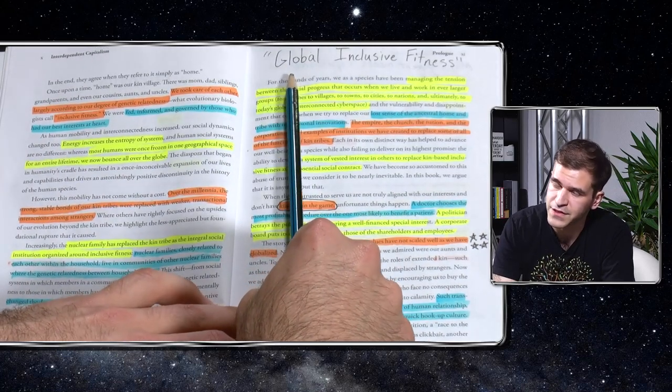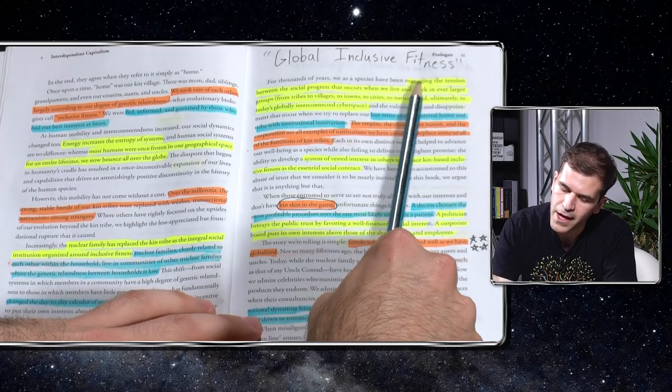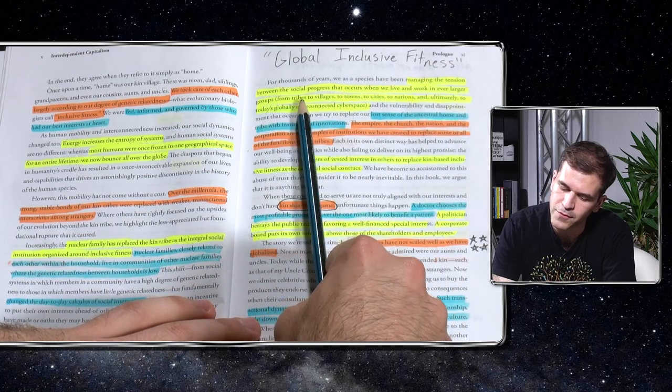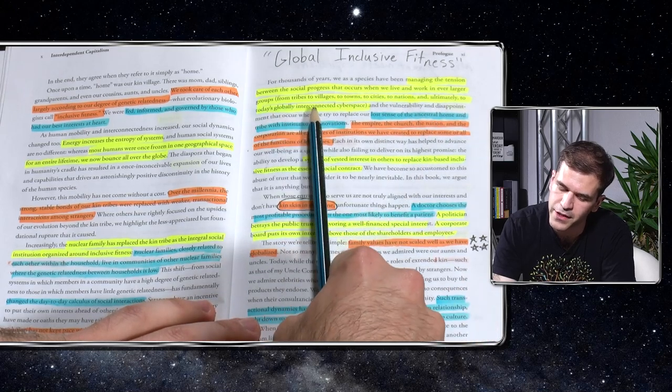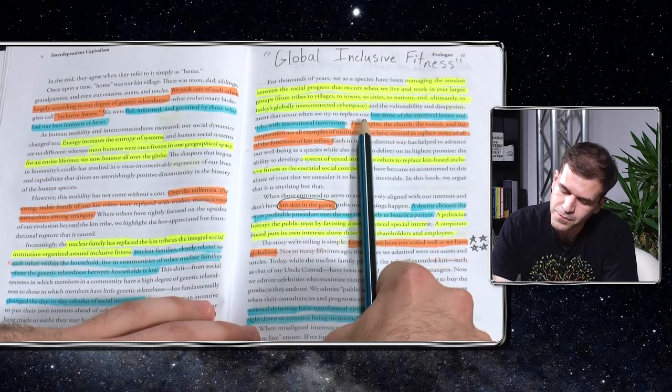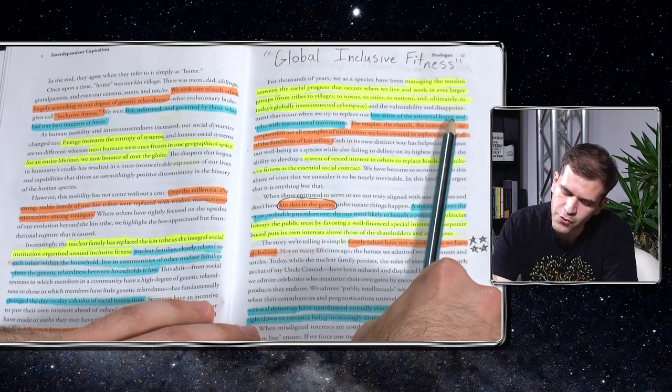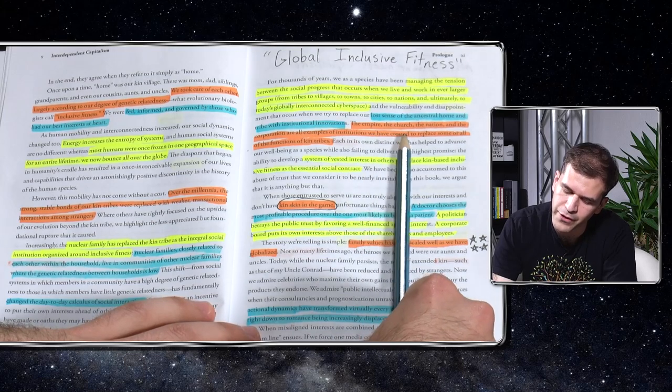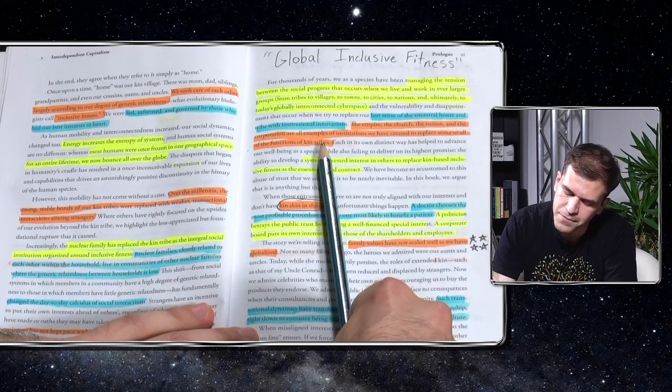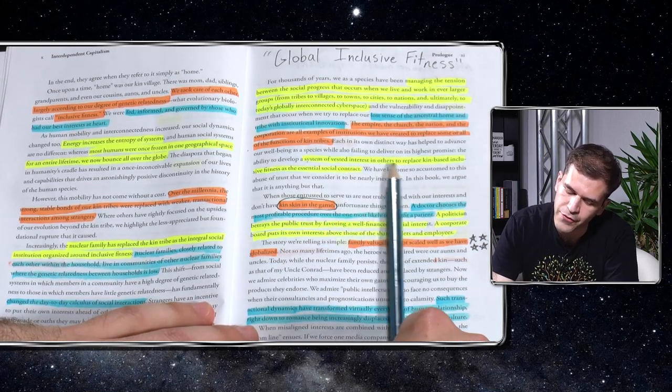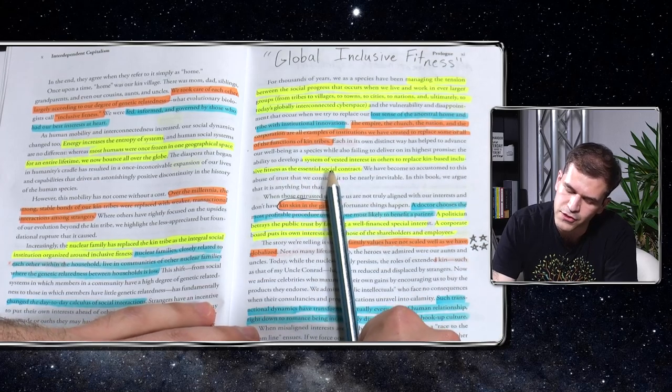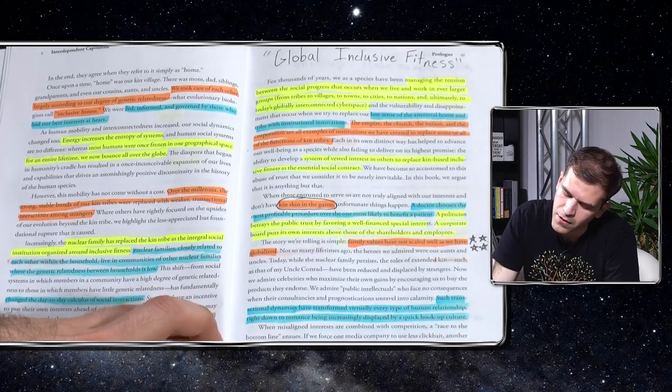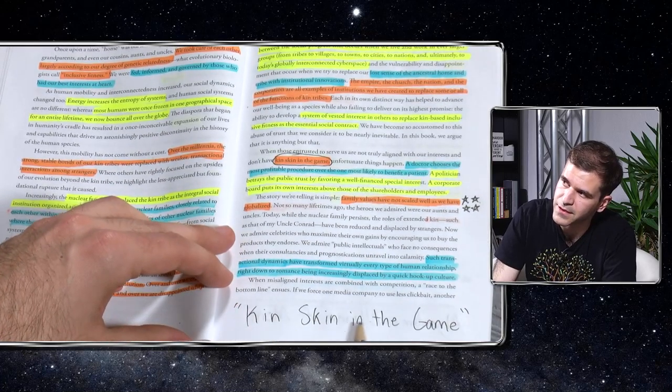The nuclear family has replaced the kin tribe as the integral social institution organized around inclusive fitness. Nuclear families closely related to each other within the household live in communities of other nuclear families where the genetic relatedness between households is low. This has fundamentally changed the day-to-day calculus of social interactions. In short, our biological evolution has not kept pace with our cultural evolution. Over and over we expect strangers to act like they are our kin. And over and over we are disappointed when they do not.